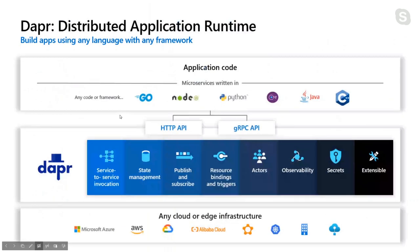Moving on to the various building blocks of the DAPR runtime - DAPR consists of all these building blocks: service-to-service invocation, state management, pub/sub, actors, secrets, and observability. You can write on any cloud or edge infrastructure, with functionalities exposed over HTTP or gRPC APIs. Then you write your code in any language - Go, Node, Python, .NET, C++, basically any language which supports HTTP or gRPC invocations, and you can leverage all these capabilities from DAPR.